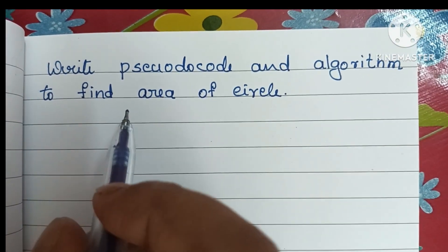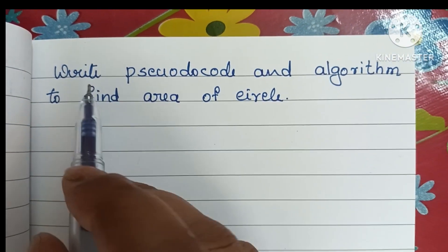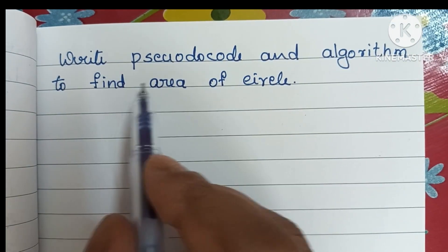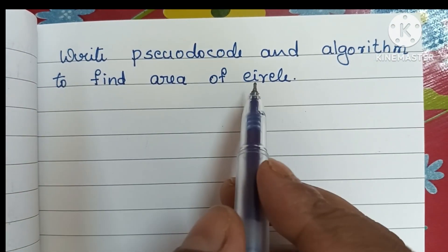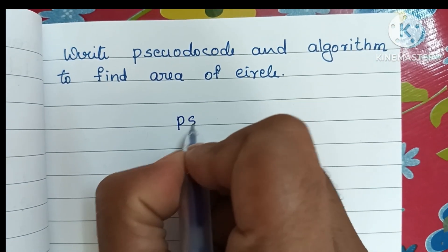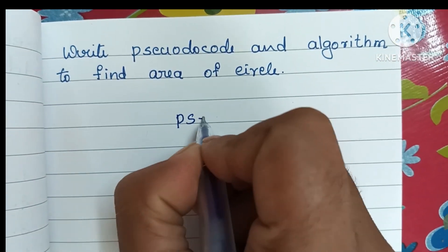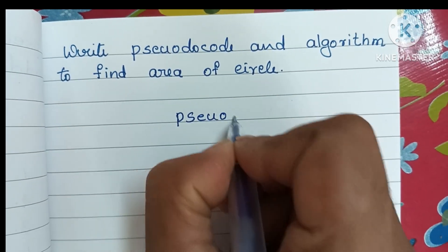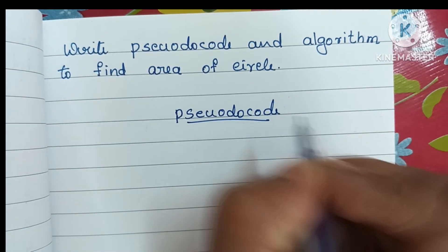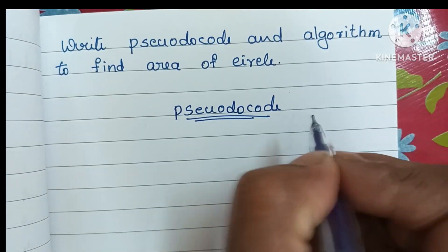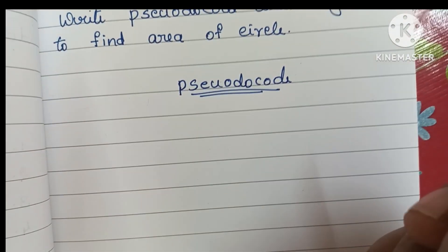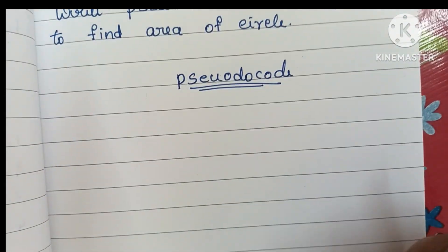In this video we're going to learn how to write pseudocode and an algorithm to find the area of a circle. Pseudocode is a simplified programming language but it does not follow any strict rules.